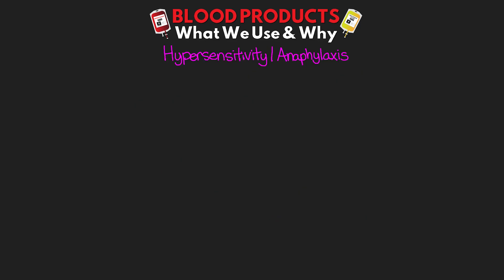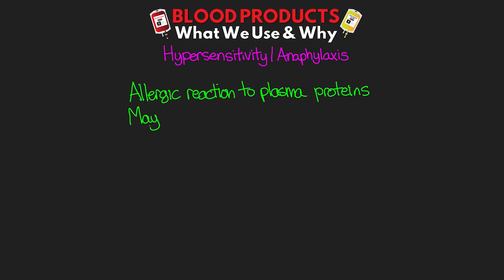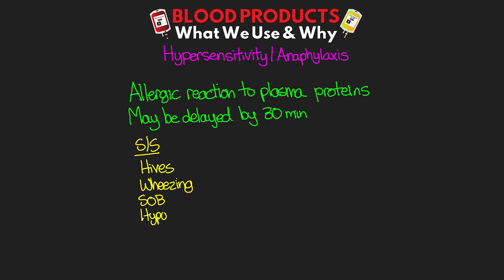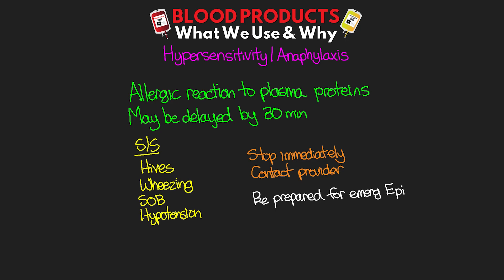The next reaction is going to be our hypersensitivity reactions, or what we would refer to as an anaphylaxis reaction. This results from an allergic reaction to the plasma proteins. This reaction may be delayed by up to 30 minutes, which is really why we transfuse slowly over the first 15 to 30 minutes in those non-emergent situations. Signs and symptoms we would expect to see are things like hives, wheezing, shortness of breath, and hypotension. Once again, we do want to stop the transfusion immediately and contact the provider. Here, we want to be prepared for emergency use of epinephrine, as well as possibly giving them steroids or antihistamines.